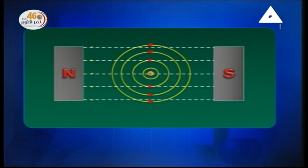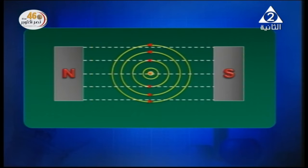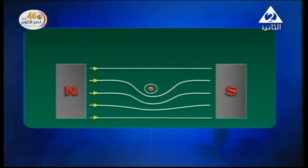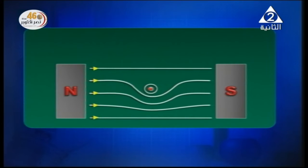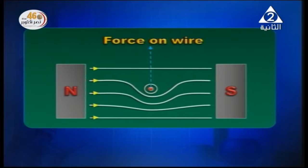On one side of the wire, the two fields will have the same direction; on the opposite side, the fields will have opposite directions. So, the fields on one side increase — where the two fields have the same direction — and on the other side the field density decreases. Don't forget that flux lines tend to repel each other sideways, so a force is generated on the wire. The wire experiences a magnetic force.